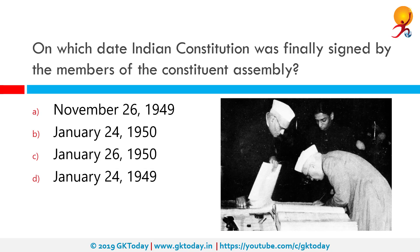On which date was the Indian constitution finally signed by the members of the constituent assembly? The correct answer is January 26, 1950. The constitution was adopted on 26 November 1949; however, it came into full effect from 26 January 1950. The constituent assembly had members from all parts of India, selected so as to represent all the social groups of India.